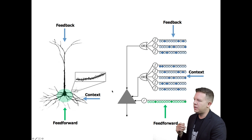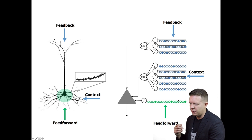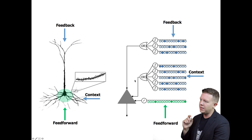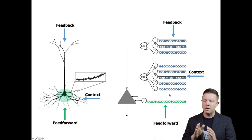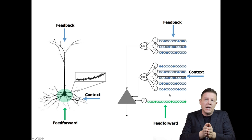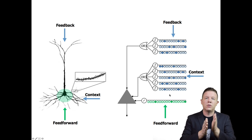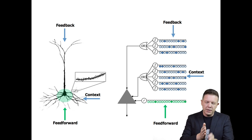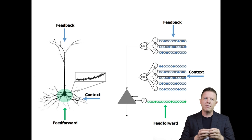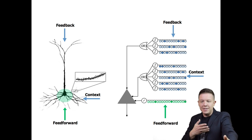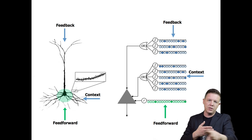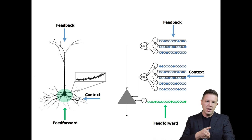Now this HTM neuron diagram over here is showing that there's feedforward input but it's also showing that it can have one or many distal connections. These are distal segments. Each one of these segments could potentially have one or many synapses or connections to other cells within the HTM structure.